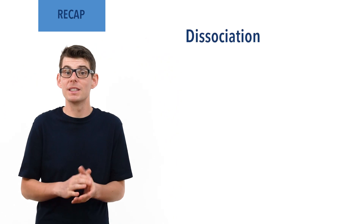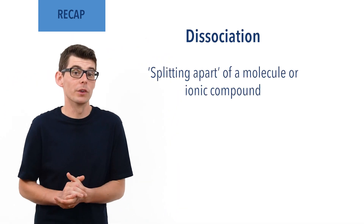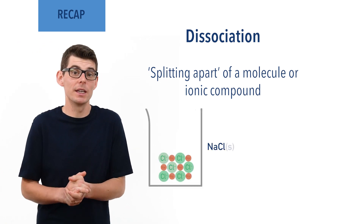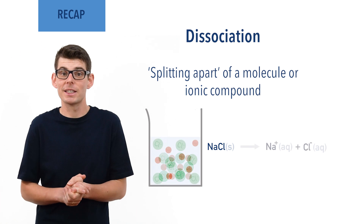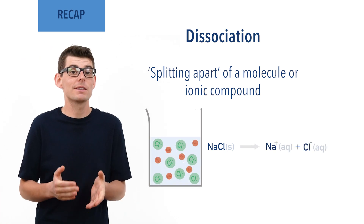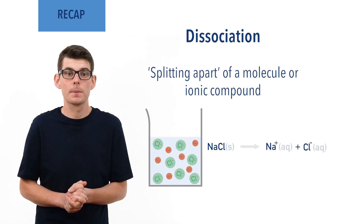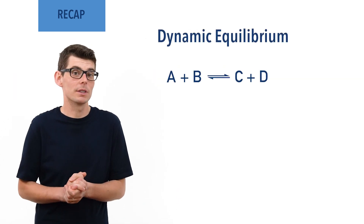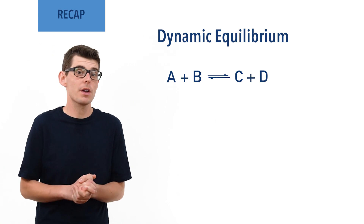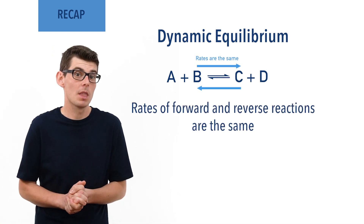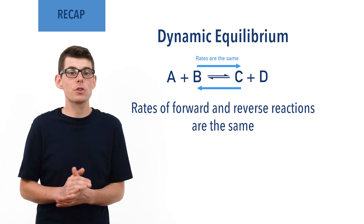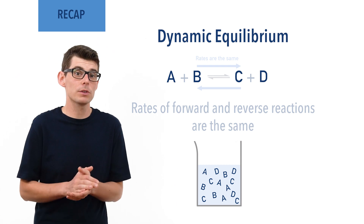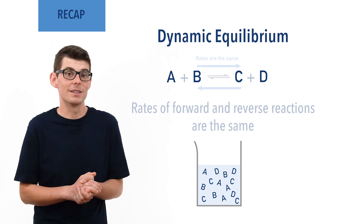Dissociation refers to the splitting apart or breaking of a compound. For example, the salt sodium chloride dissociates into positively charged sodium ions and negatively charged chloride ions as it dissolves in water. A dynamic equilibrium refers to a reversible reaction in a closed system in which the rates of the forward and reverse reactions are the same. This means at equilibrium there is a mixture that contains both reactants and products and their concentrations remain constant as long as the system remains at equilibrium.